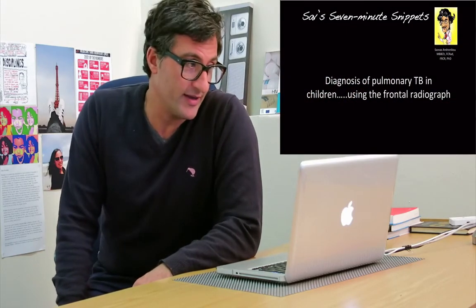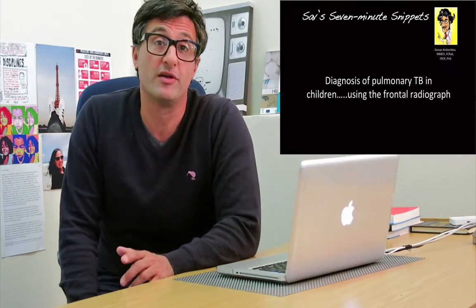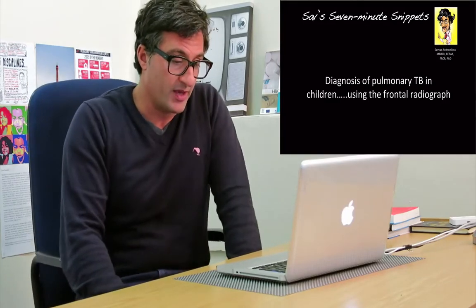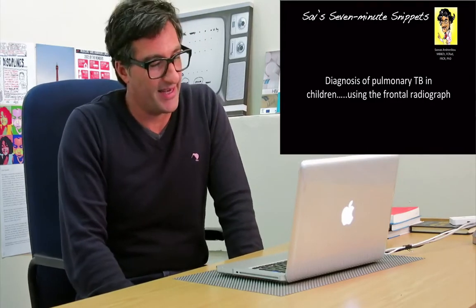Hi, my name is Savas. I'm a radiologist working in Africa and this is one of Sav's 7-minute snippets. This lecture is about diagnosing TB in children, in particular using a frontal chest radiograph — we'll use another lecture to look at the lateral chest radiograph. The lecture is designed for use by anybody working with children and needing to make a diagnosis of TB, and it's intended that these skills help you make a diagnosis at the point of care.